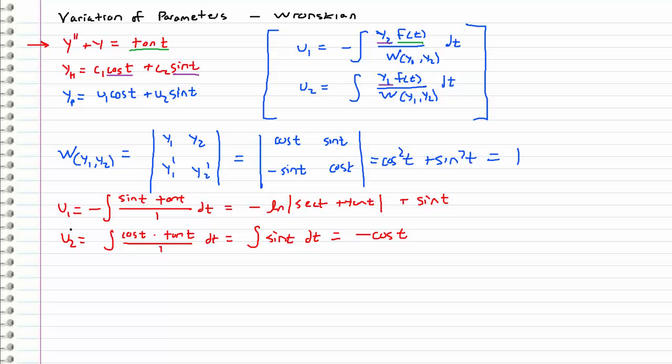So we've already computed u1 and u2 and saved a bunch of time. We're ready to assemble our final solution, which is the homogeneous solution plus the particular solution.